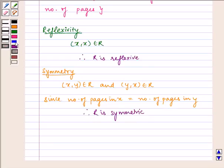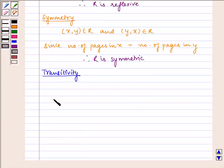Let us check for transitivity. Let (x,y) belongs to R and (y,z) belongs to R.